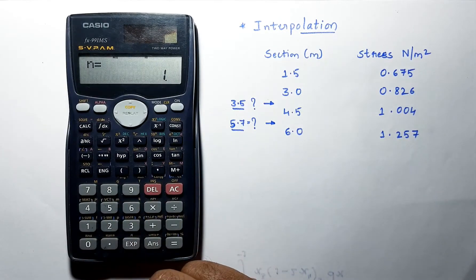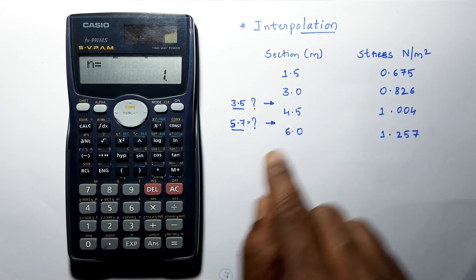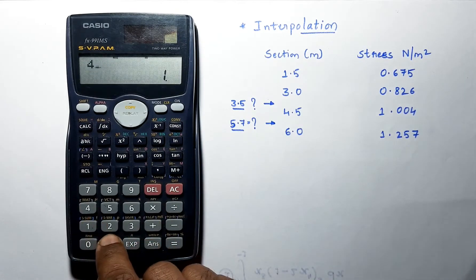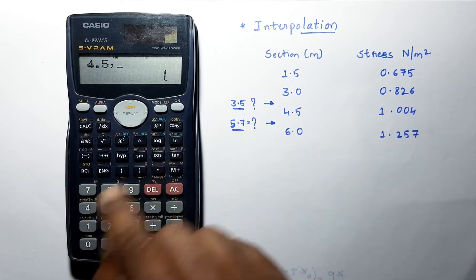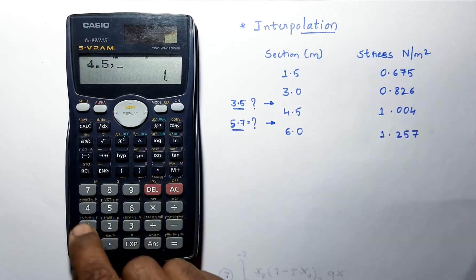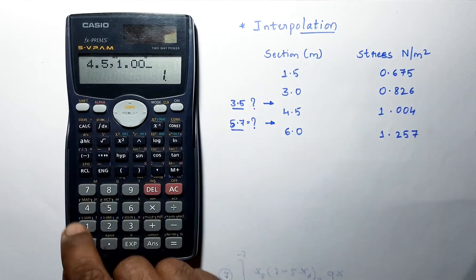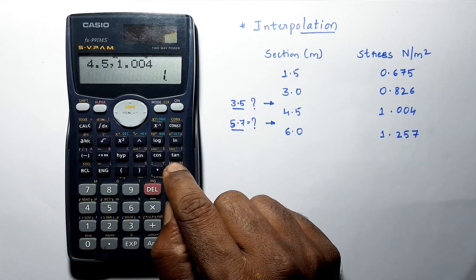This data is stored now. Now again, enter this value 4.5, 1.004. Again press M plus.